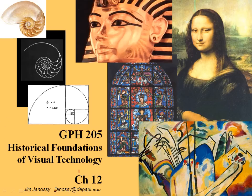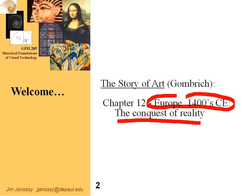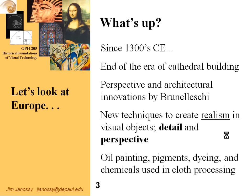Hi, this is Jim Janesey. This is Chapter 12 of the Gombrich textbook, The Story of Art. This chapter is entitled The Conquest of Reality, and it deals with Europe, primarily Italy, in the 1400s.